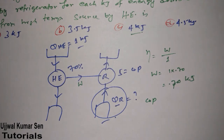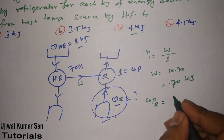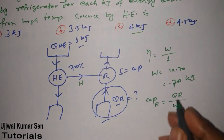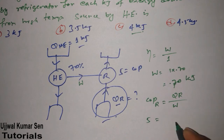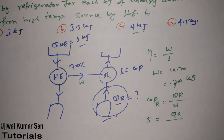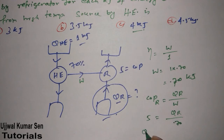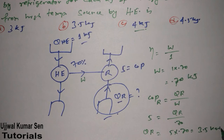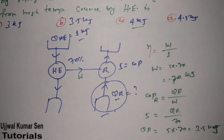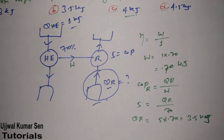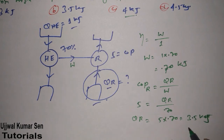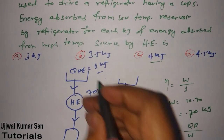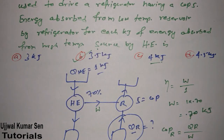For the refrigerator, COP = Q_R / W. COP is 5 and W is 0.70 kJ, so Q_R = 5 × 0.70 = 3.5 kJ. Note this is in kilojoules, not kilowatts, since the problem does not involve time. So the answer is 3.5 kJ, which is option B.